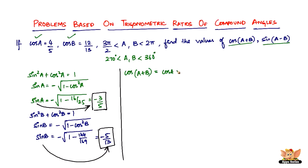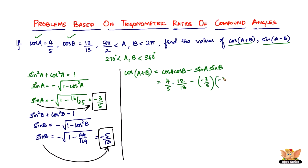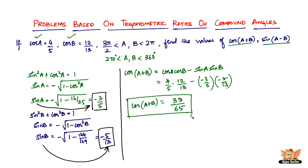cos(a + b) = cos a · cos b − sine a · sine b. So that is (4/5)(12/13) minus (−3/5)(−5/13). Solving this gives 33/65. Therefore cos(a + b) = 33/65.